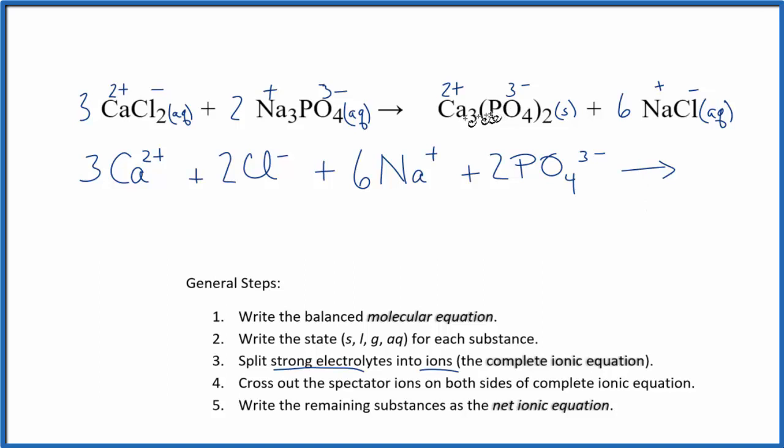For the products, we're not going to split the calcium phosphate up because it's a solid. That means it's a precipitate, essentially it falls to the bottom as a solid, so we can't split it apart. So for net ionic equations, we don't split the solids apart. So we're going to write Ca3(PO4), and we're going to keep that together.